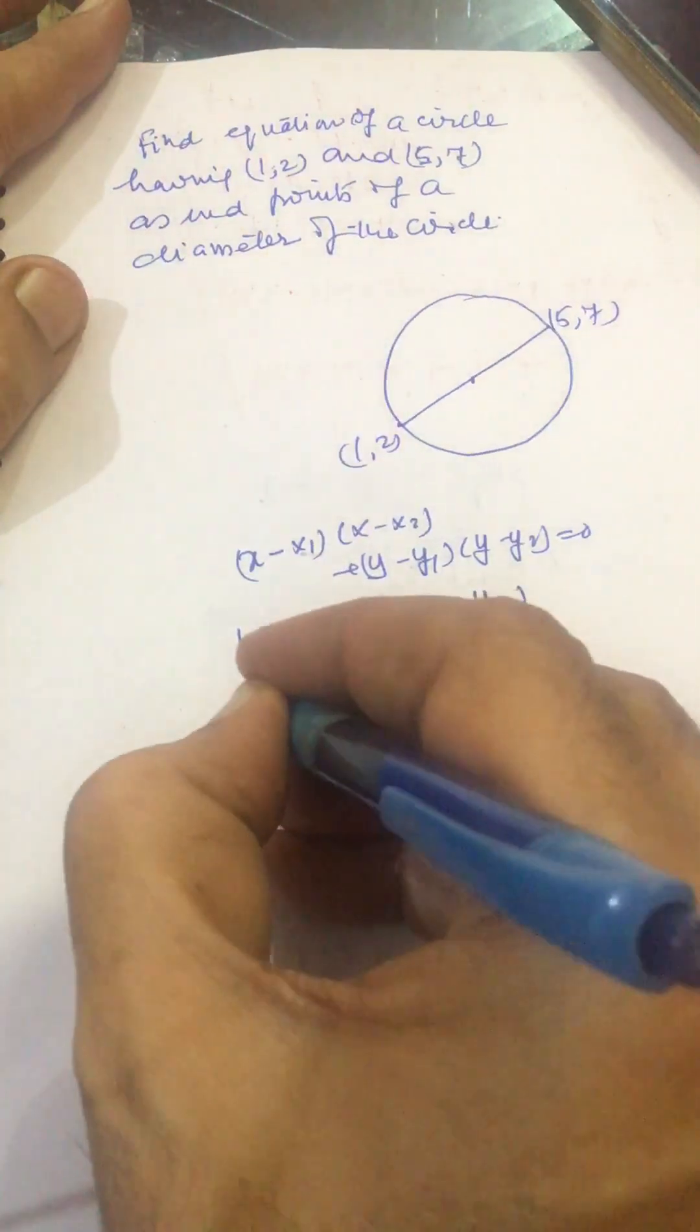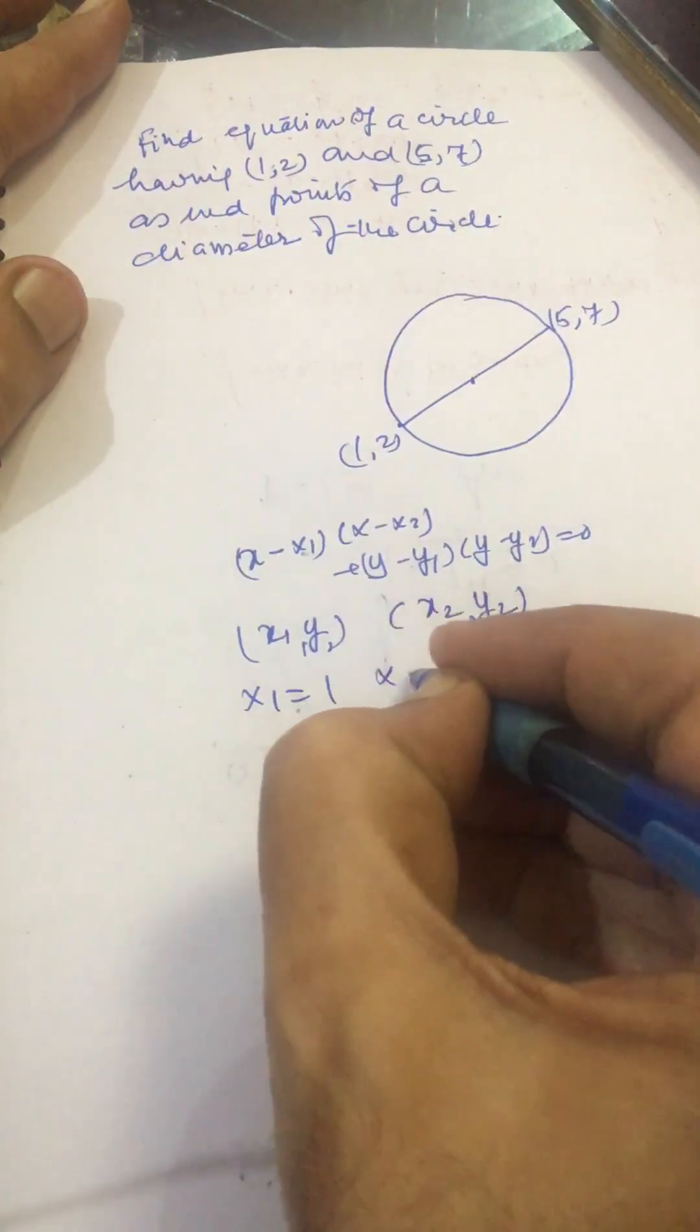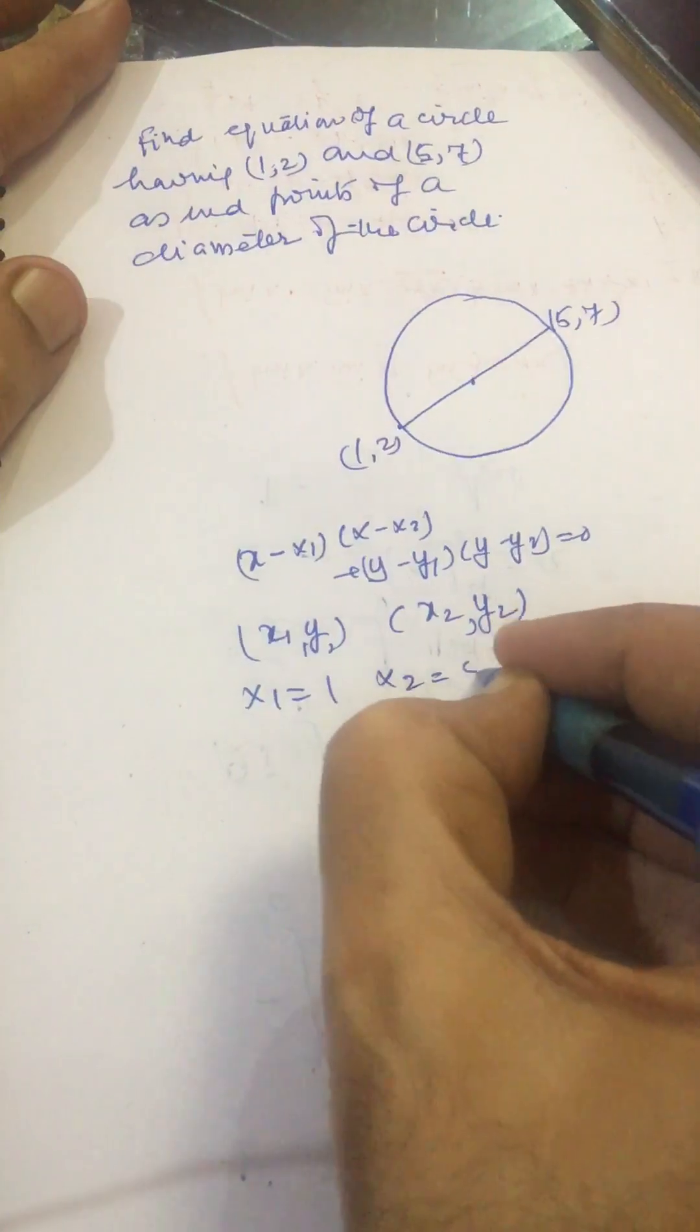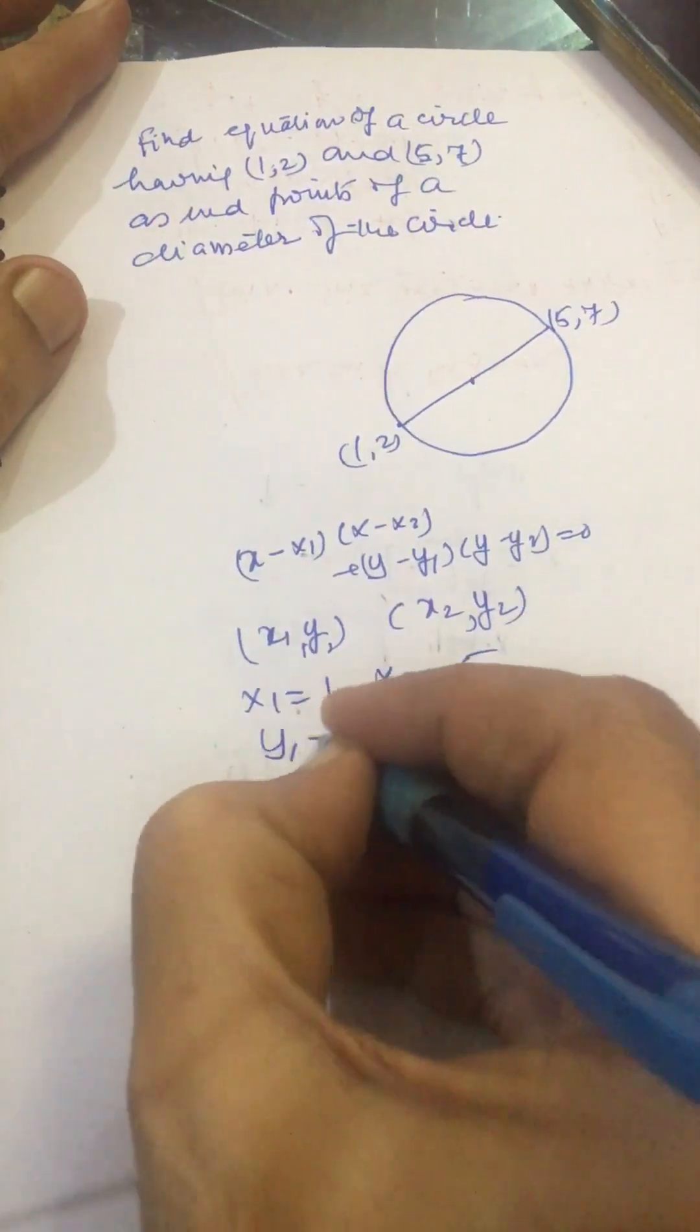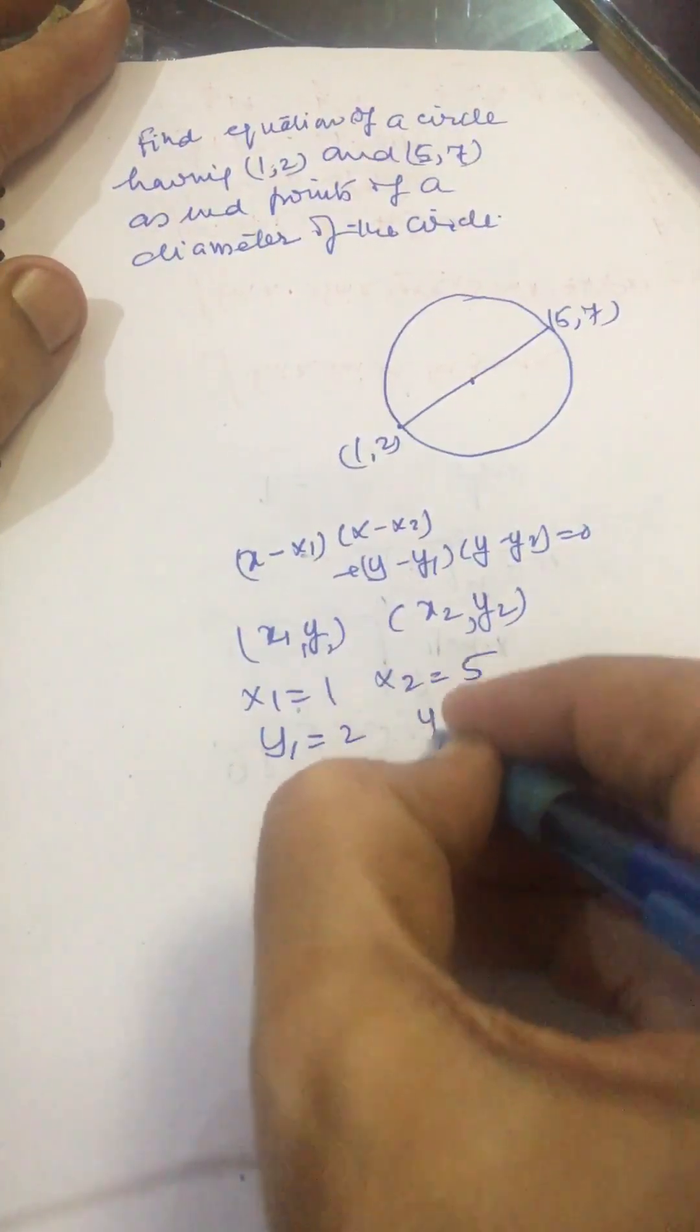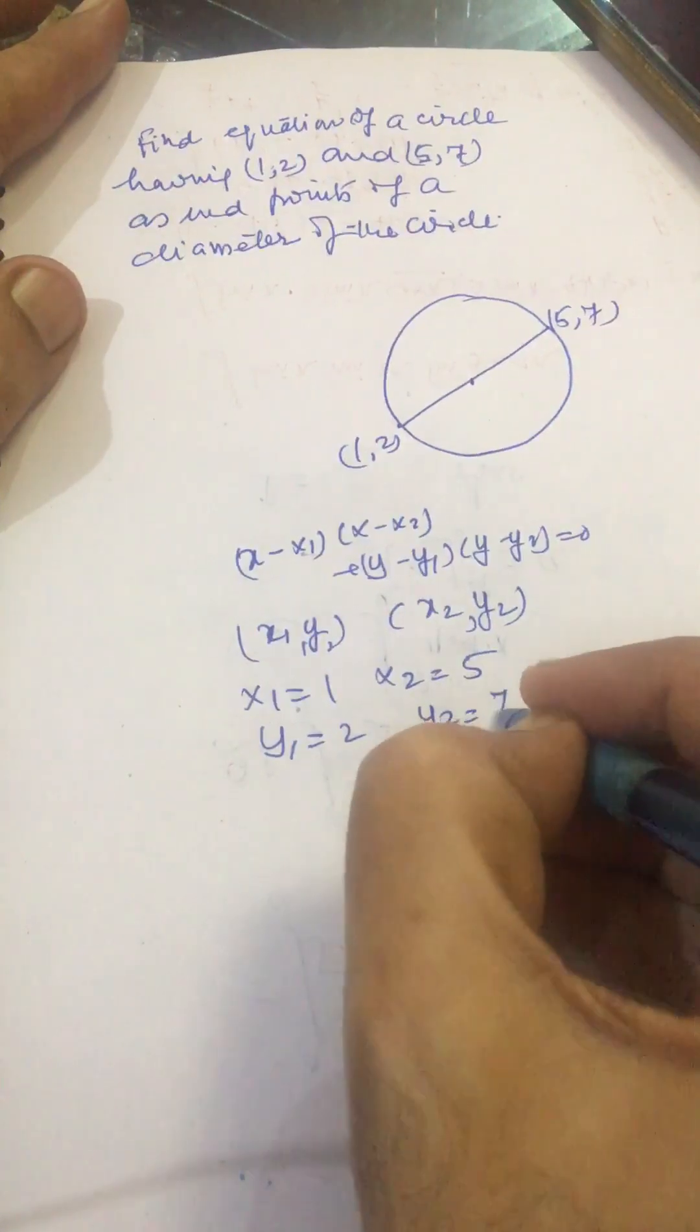Here x₁ = 1, x₂ = 5, y₁ = 2, and y₂ = 7.